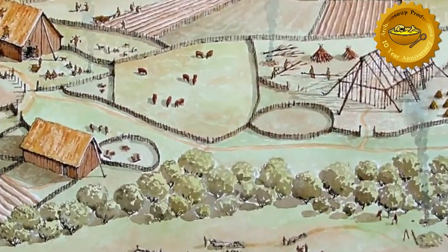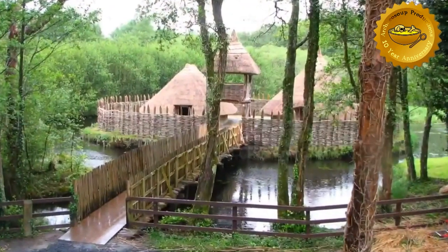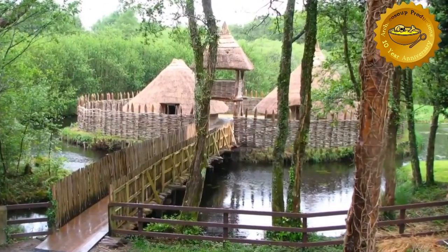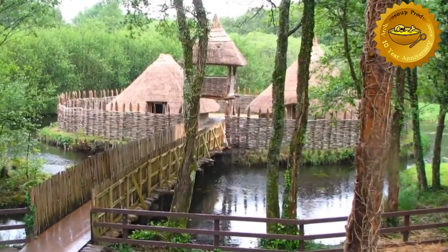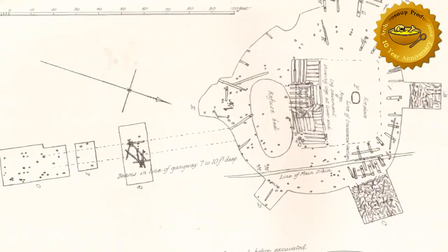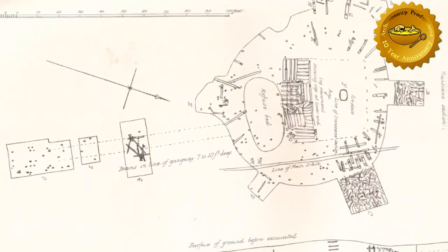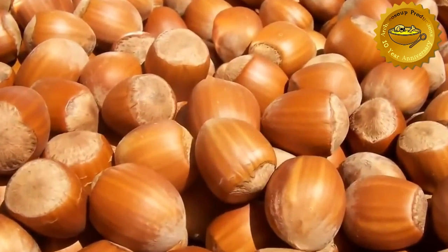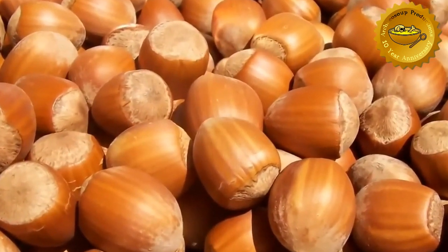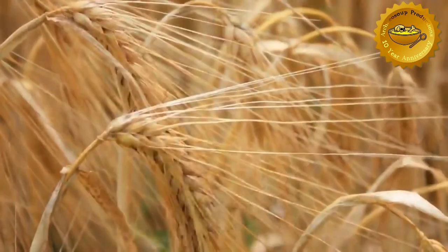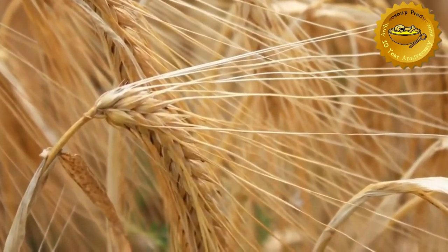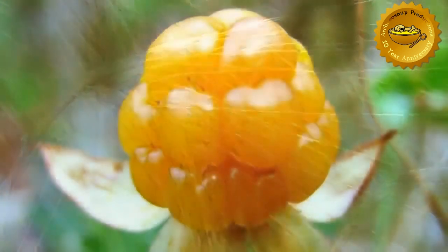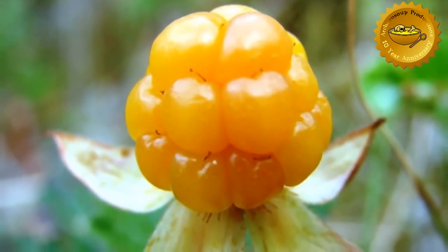Another area where botanical remains have proved invaluable to archaeology has been the study of crannogs — Neolithic houses suspended above water on stilts. The waterlogged mounds which are often left in the wake of these structures have revealed a great deal about the diets of people who lived in them. The remains of hazelnuts have been discovered along with barley, and also extremely delicious cloudberries, which make wonderful jam.